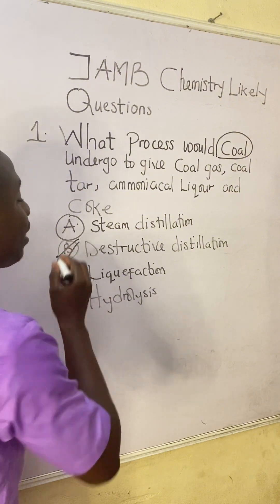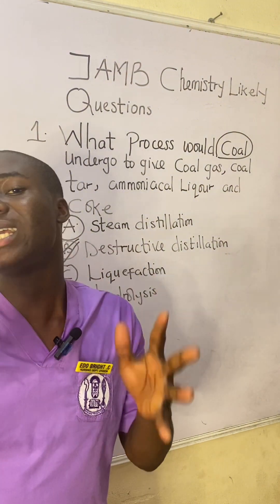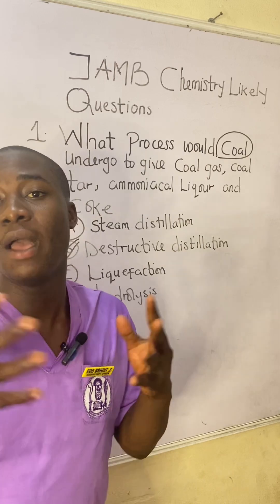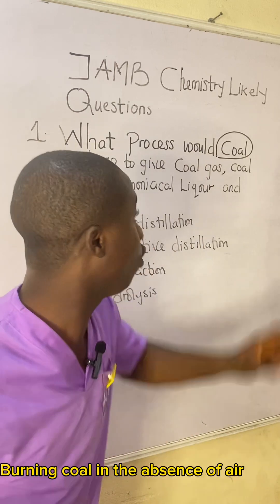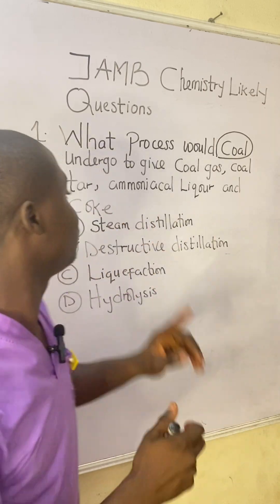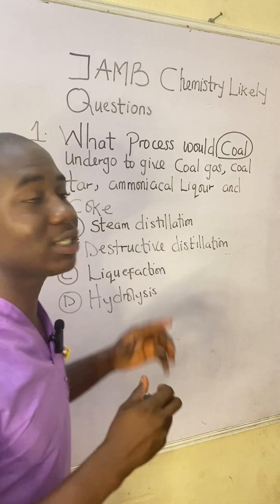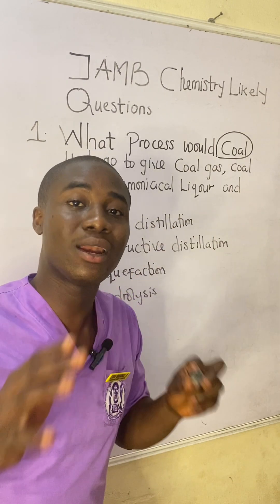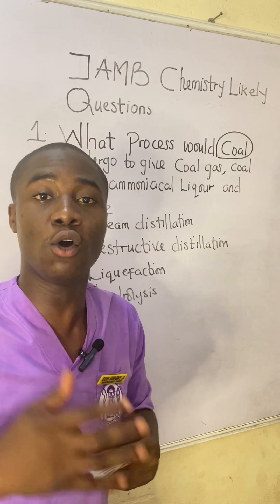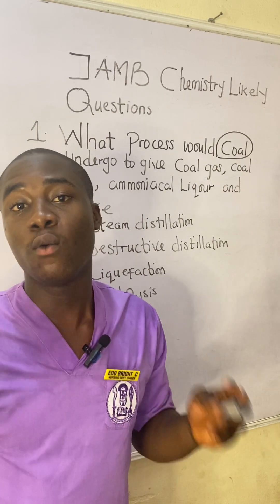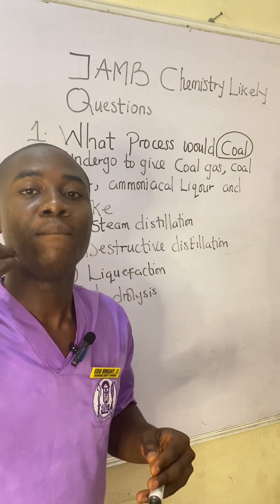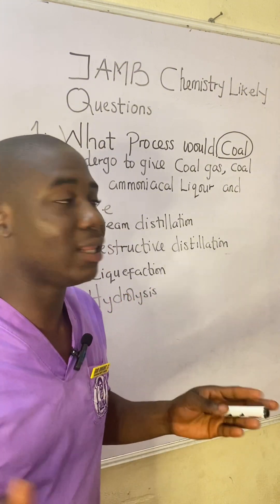The process is called destructive distillation of coal — that is the answer to the question. This process means burning coal in the absence of air. Destructive distillation of coal can also be called dry distillation of coal, or simply carbonization of coal.